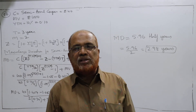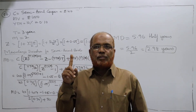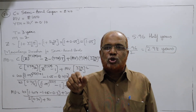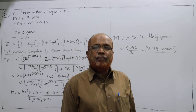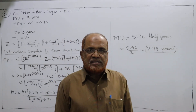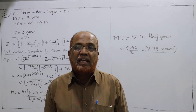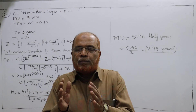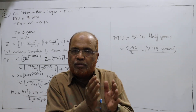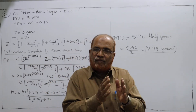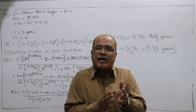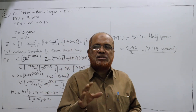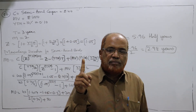In unit number 2 on fixed income securities, we have done three types of problems. The first type is valuation of bond — whether annual or semi-annual — using the formula V equals C into PVAF(R%, N years) plus M into PVF(R%, N years). In the first video I explained how to calculate the annuity factor and PV of Re.1 factor using a simple calculator. If you are not perfect, go back to the first problem video where I explained these calculations in detail.